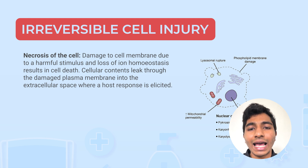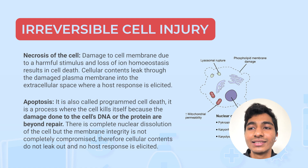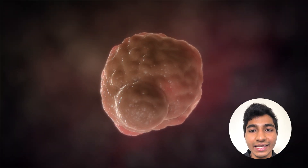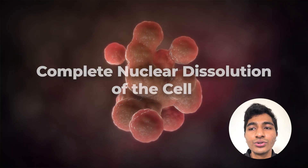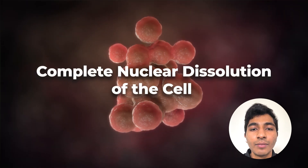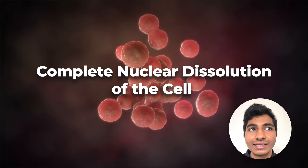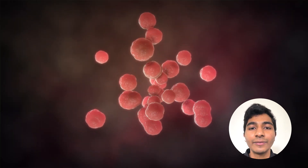Whereas apoptosis is more of a programmed cell death — it is a process where the cell actually kills itself because the damage done to the cell's DNA and proteins are beyond repair. There is complete nuclear dissolution of the cell, but membrane integrity is not completely lost. As a result, there is no leakage of proteins through the cell membrane and therefore no inflammatory process.